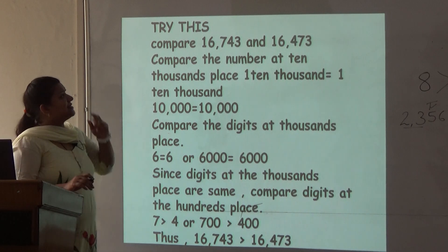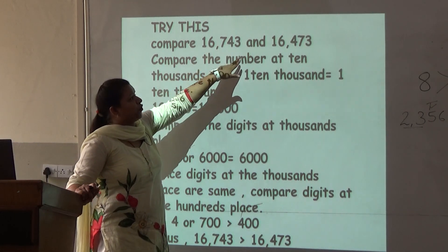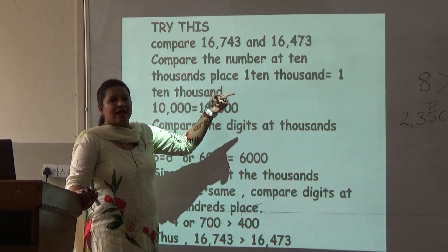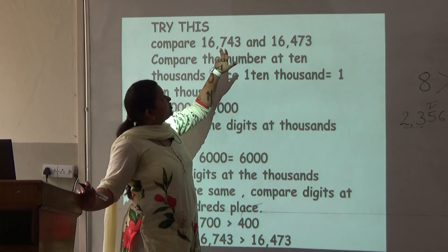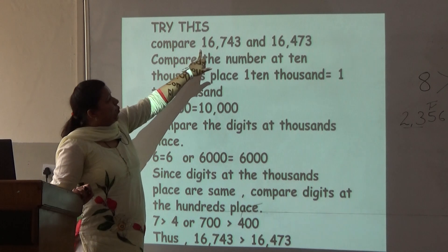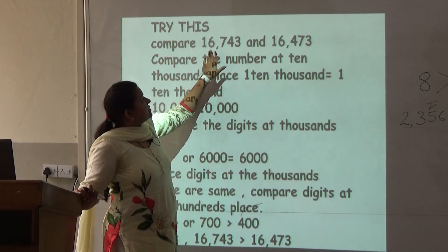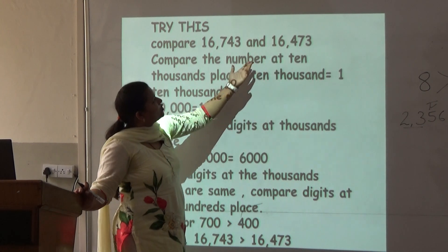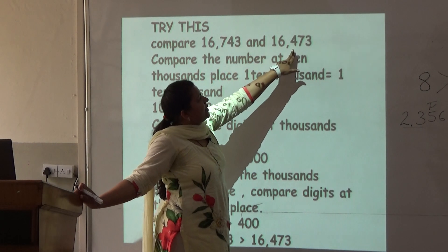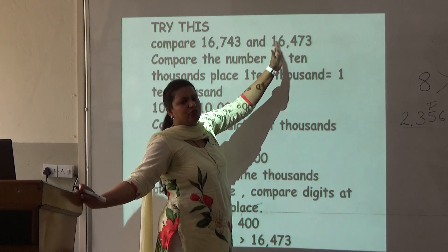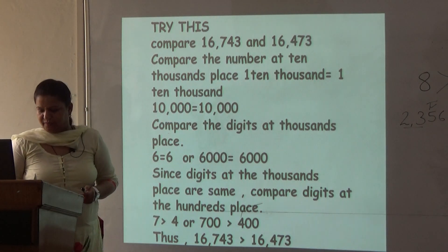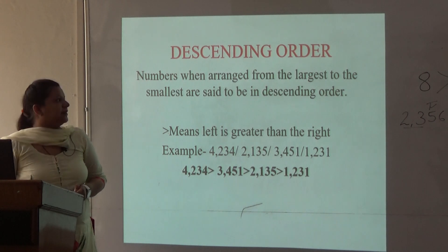Here is another example with the 5-digit number 16,743. Again we see the digits at different place values. At the ten-thousands place both have 1, and at the thousands place both have 6 — same. Now when we go to the hundreds place, in this number it is written 7 and in the other it is written 4. So the mouth opens towards this number — 16,743 is the bigger number. This is how we compare the numbers.